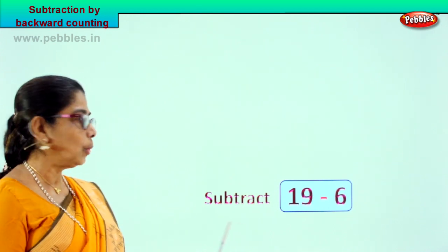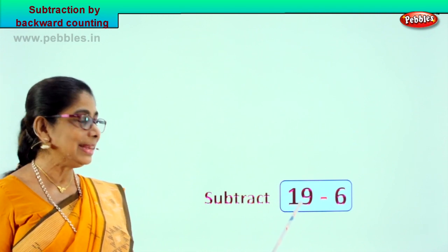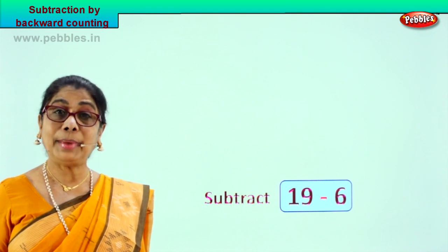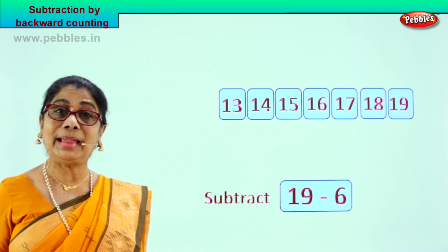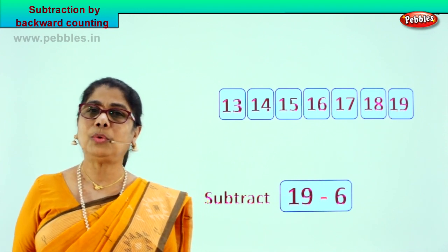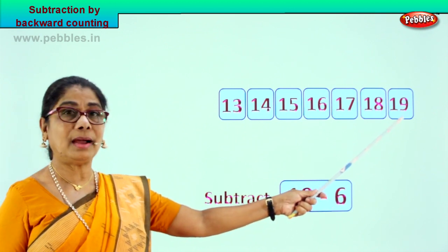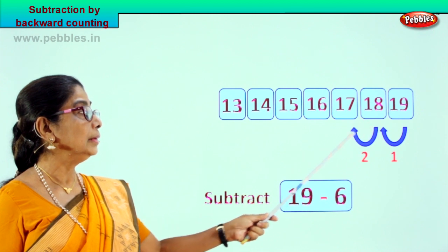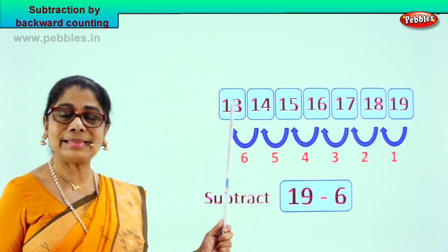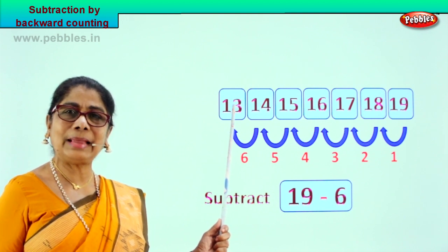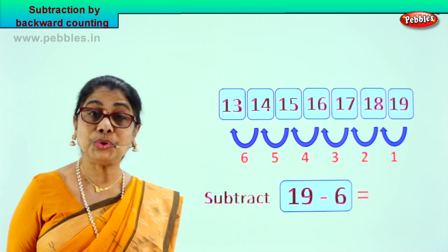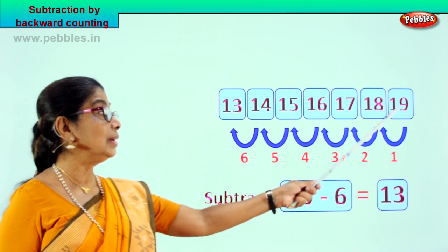Let's look at our problem. What is our problem? The subtraction problem is 19 minus 6. You will be given 19 — take 6 steps backward. Count 6 steps from 19 and you will get the correct answer. So from 19 we are going to go backward counting — 6 steps only. Let's start: 19 — 1, 2, 3, 4, 5, 6. We counted from 19, 6 steps backward, and arrived at the answer. 19 minus 6 gives you answer 13.